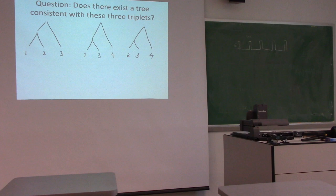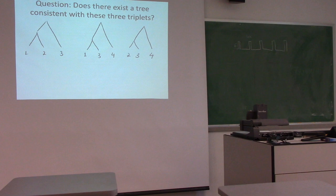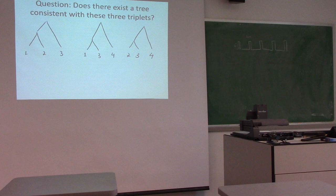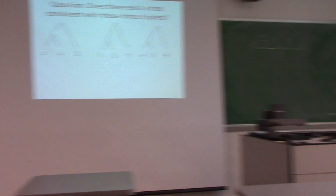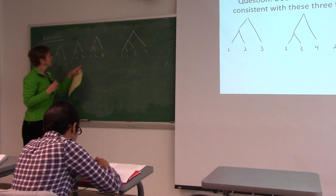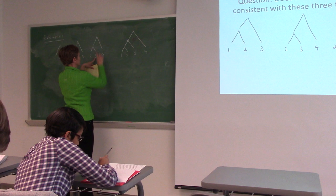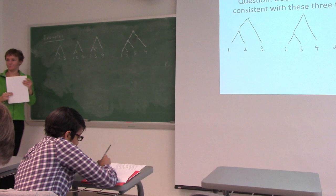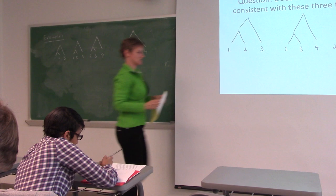A student suggests drawing a branch. We can draw a tree with one, two, three, four. This one is satisfying because one and two branch off together, and one, two, and three share a common ancestor. For the triplet one-three-four, the least common ancestor of one and three is below the least common ancestor of all three. We agree this one is consistent.